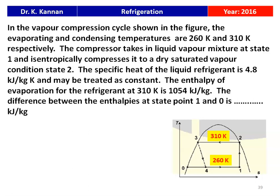The next question is from the 2016 question paper. In a vapor compression cycle, the evaporating and condensing temperatures are 260 Kelvin and 310 Kelvin respectively. The compressor takes in a liquid-vapor mixture at state 1 and isentropically compresses it to dry saturated vapor at state 2. The specific heat of the liquid refrigerant is 4.8 kJ/kg·K. The enthalpy of evaporation at 310 Kelvin is 1054 kJ/kg. We need to find the enthalpy difference between state 1 and state 0.